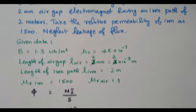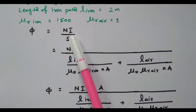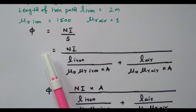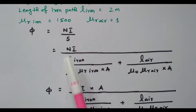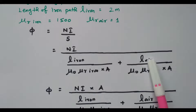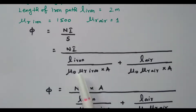So flux φ equals NI divided by reluctance S, or S equals NI divided by φ. The reluctance formula is S equal to l divided by μ₀μr times area A — that is the general formula. We have two different paths: one is the iron path and the other is the air gap.